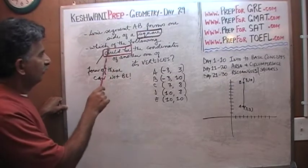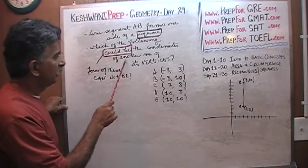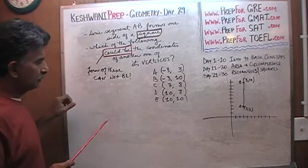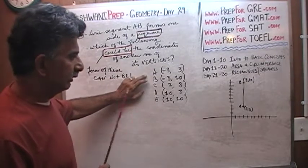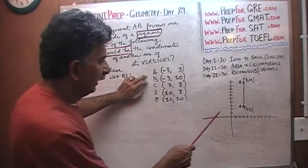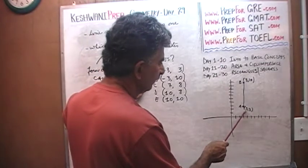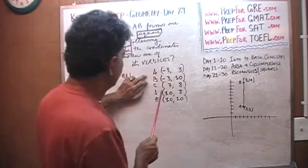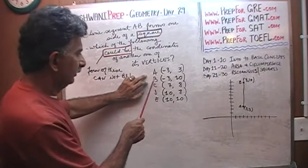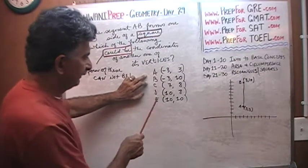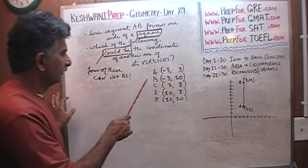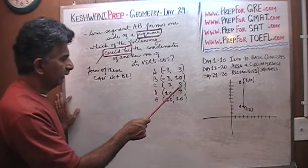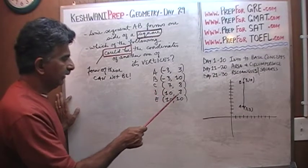The question is: which of the following could be the coordinates of another one of its vertices? AB has the vertices at (3, 3) and (3, 10). The answer choices are: A) (-3, 3), B) (-3, 10), C) (7, 8), D) (10, 8), E) (10, 10).